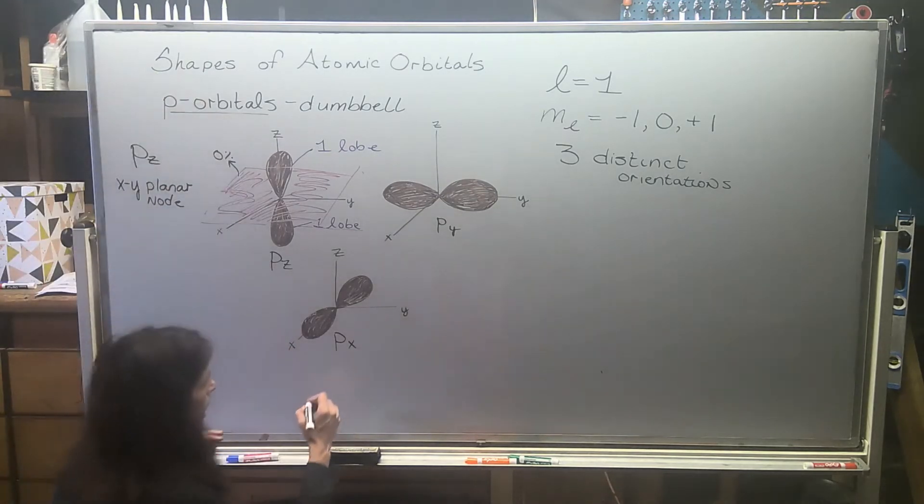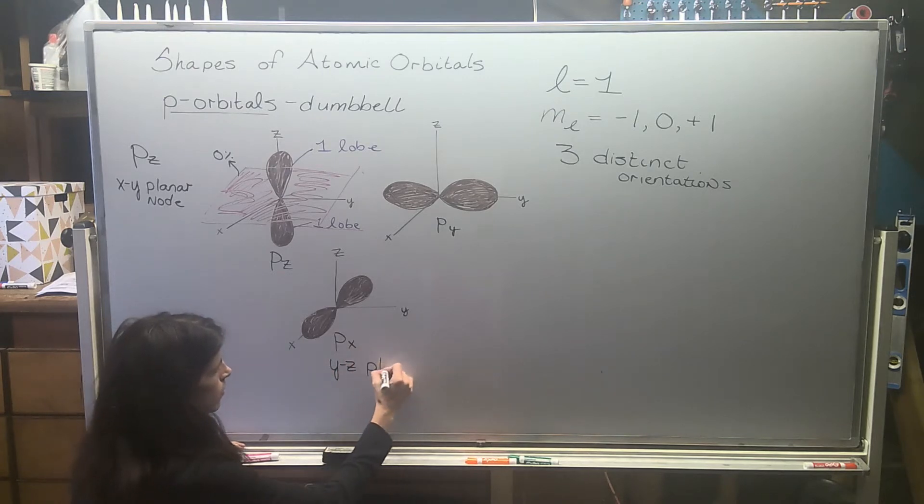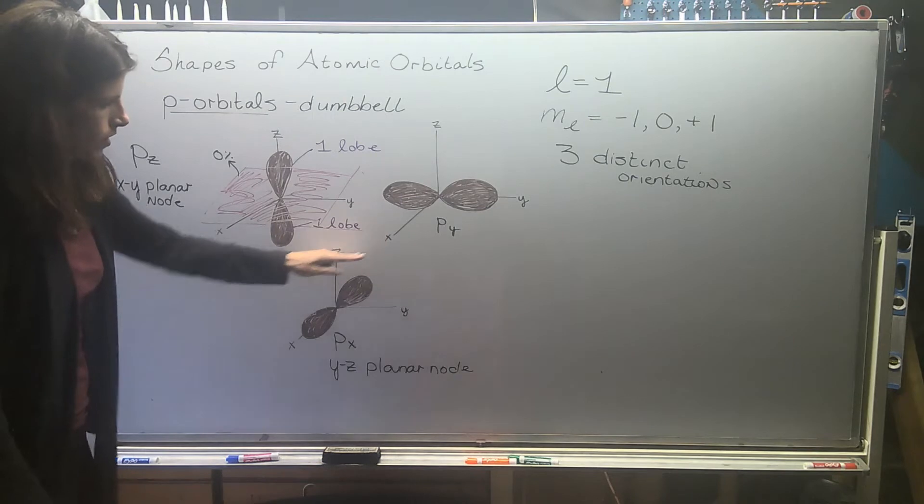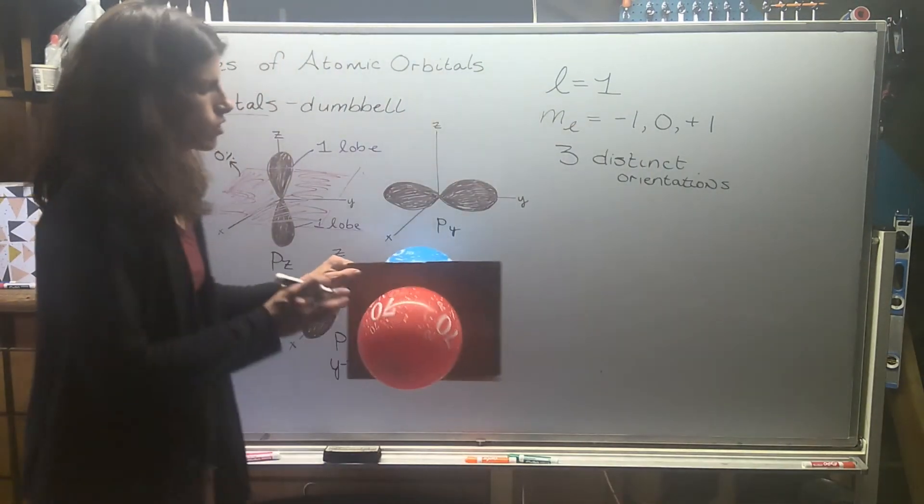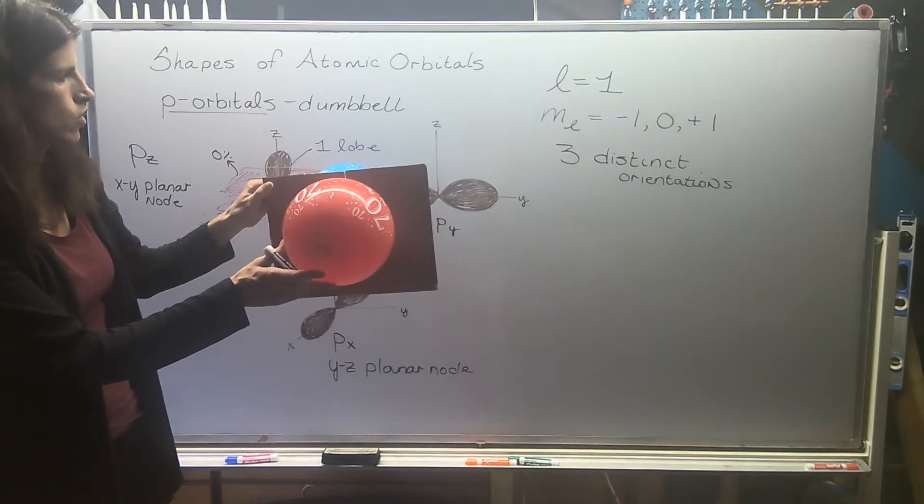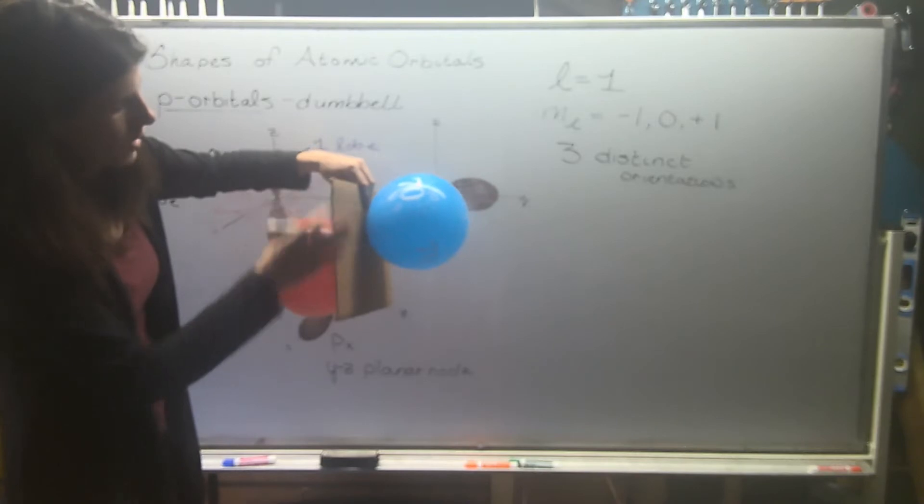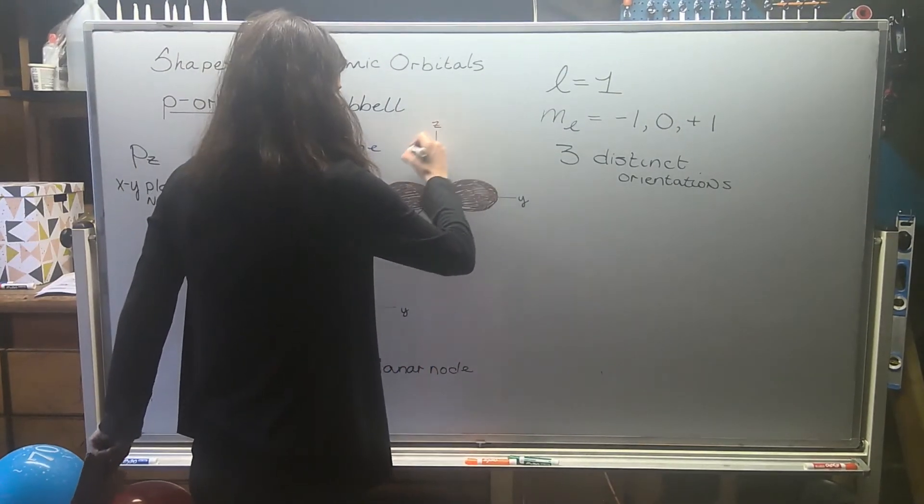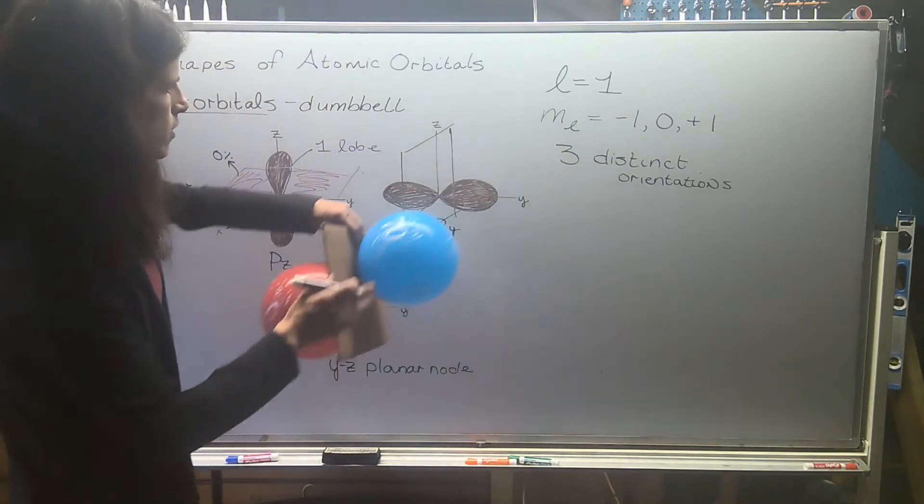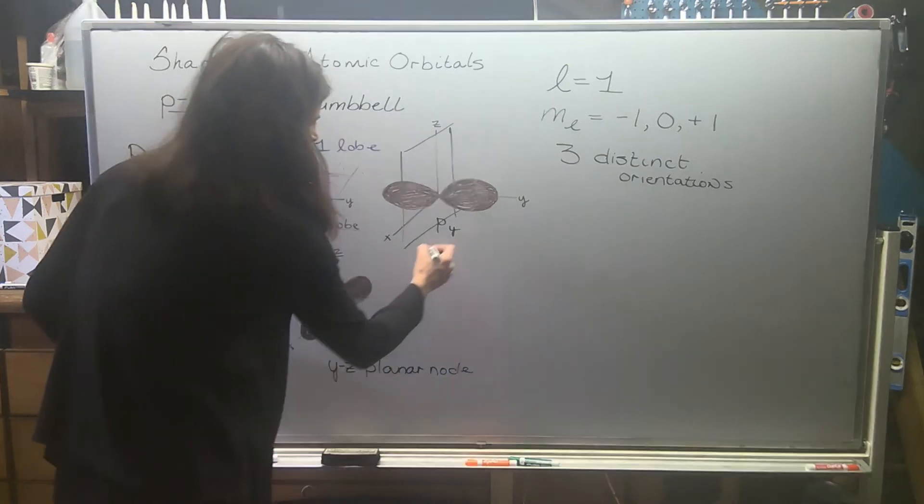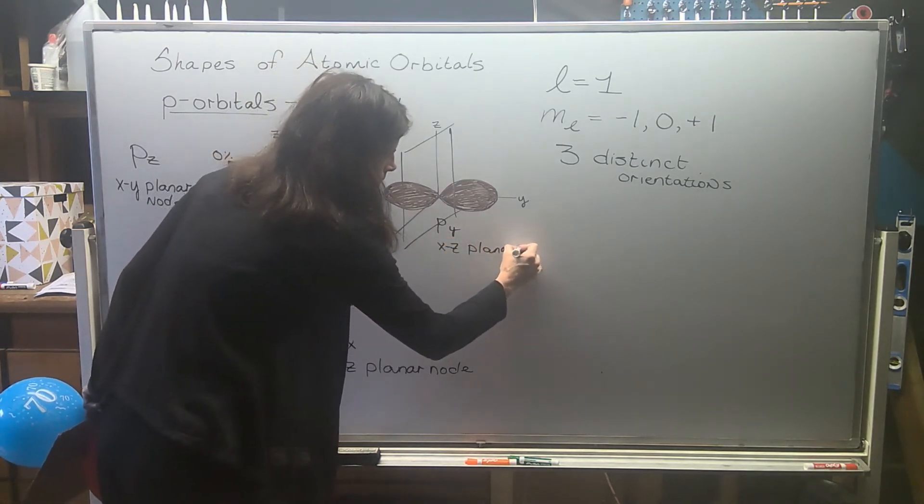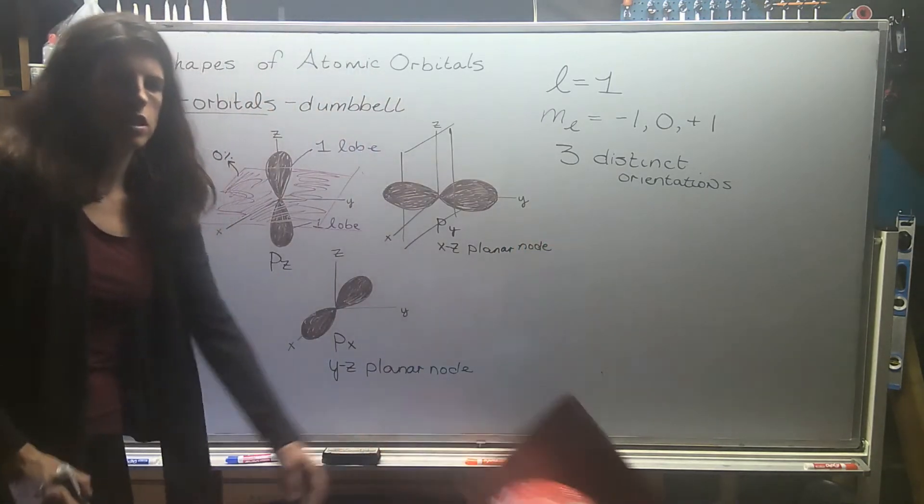Let's label it. This one, our pz has an x, y planar node. So, along this plane, your probability of finding an electron is zero. px is going to have a y, z planar node. This one is actually oriented backwards into the plane of the board. So, your planar node would look something like that where it might kind of block the backwards lobe if you're drawing it in two dimensions. This one, your planar node is just going to be your z and x. This lobe is in front of the planar node. So, py has an x, z planar node.